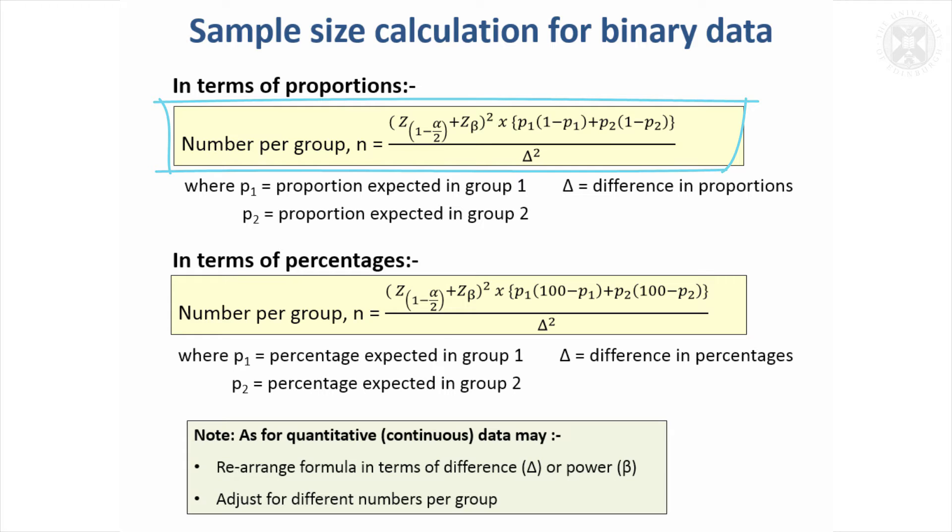What you need to specify is what you think the proportion might be in one group and what it might be in the other group. You're saying if it was this in one group and this in the other group, I would like to detect a significant difference. You need to estimate that in advance. That can be quite difficult to do, but it's only saying if this was the case rather than saying it will be the case.